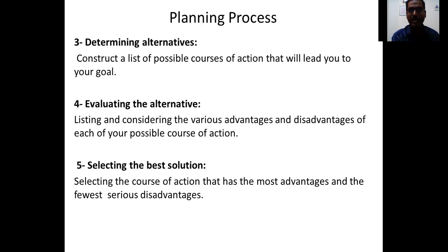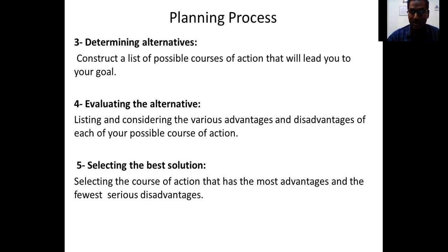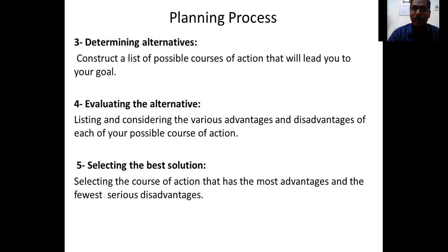The fifth step is selecting the best solution — the course of action that has the most advantages and fewest serious disadvantages. Among all the alternatives, give priority to the one with more advantages. There is no alternative that is 100 percent perfect, but we select the one with the greater percentage of advantages and fewer disadvantages.